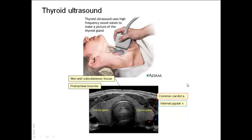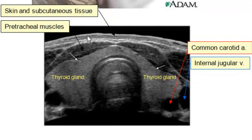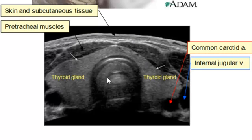This ultrasound shows a transverse section in the neck, with the anterior side above and the posterior aspect below. Anteriorly, we can see the skin, subcutaneous tissue, platysma muscle, then the pretracheal muscles, and then the thyroid gland related to the trachea. Posterolateral to the thyroid gland is the carotid sheath, with the common carotid artery and the internal jugular vein lateral to the artery.